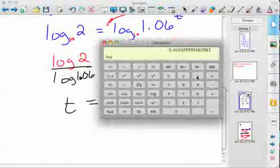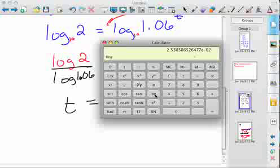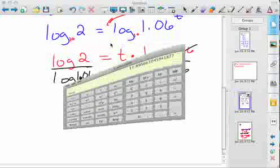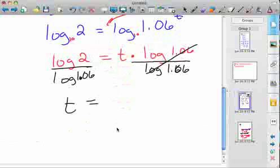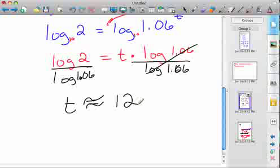So log 2 divided by log 1.06, notice I haven't got my answer yet, it equals 11.895 years, approximately, you know, this is a rounded number as well. So we need to go in here and say, the time, you know, depending on what you need to round, it's going to take approximately 12 years to double this investment.